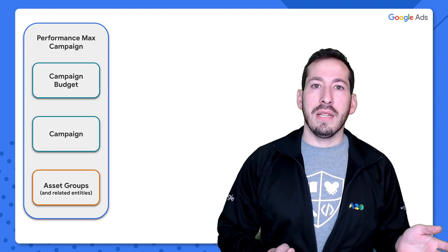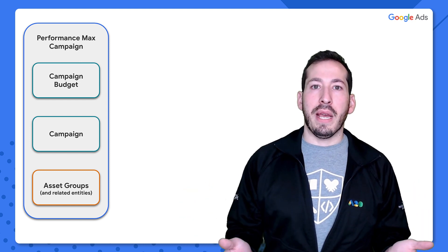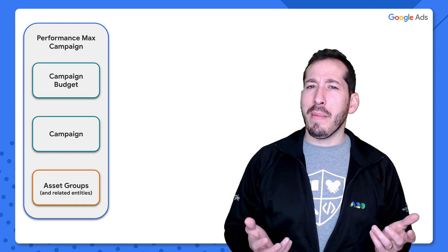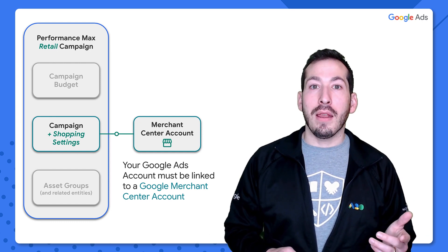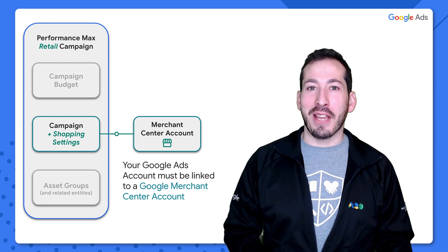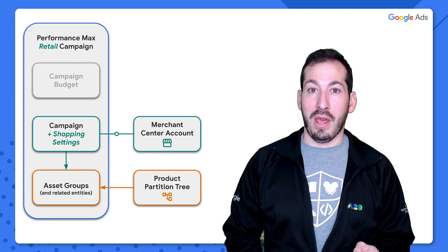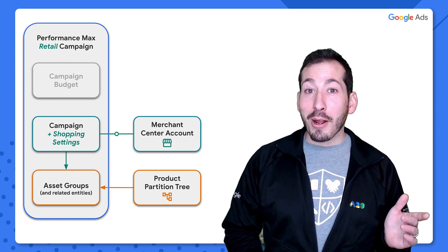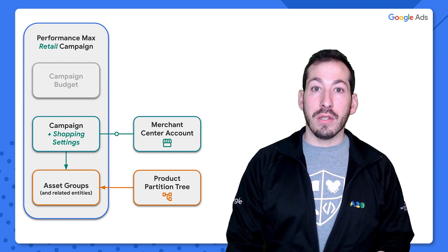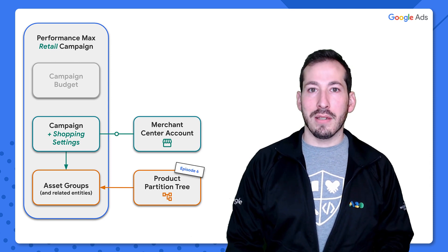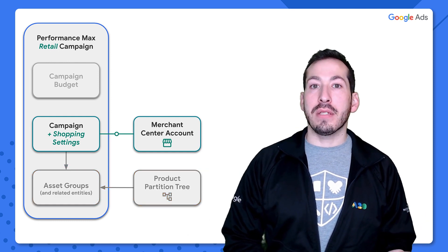We saw this simple diagram in the last episode, which entails what goes into a valid serving PMAX campaign. To make this a PMAX retail campaign, all we have to do is set some shopping settings on our campaign using data from our linked merchant center account. There is one other criteria: you must have a valid product partition tree associated with each asset group. We'll cover that in episode six. For today, we're focusing on adding shopping settings to our campaign.